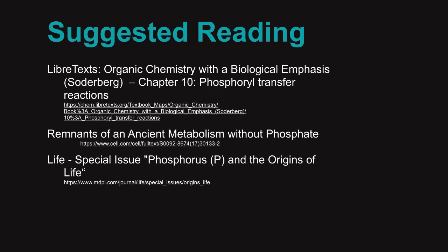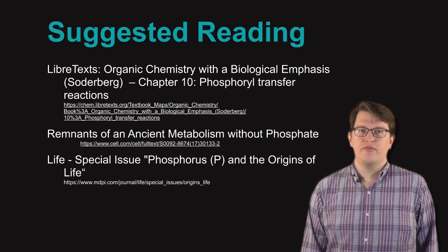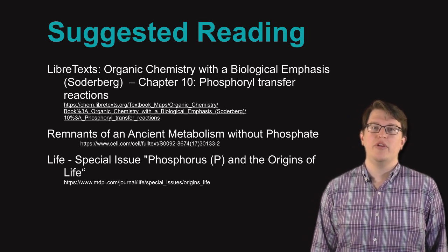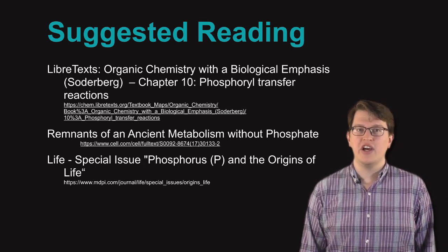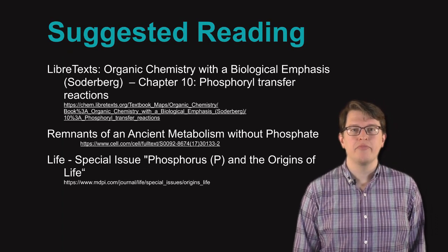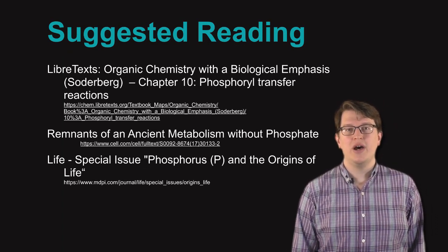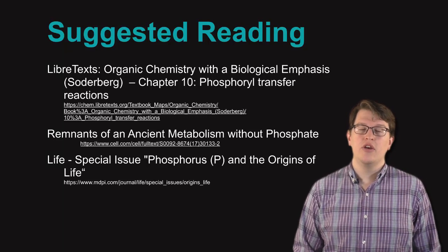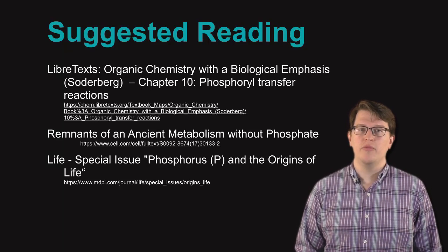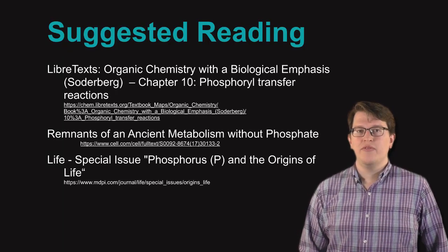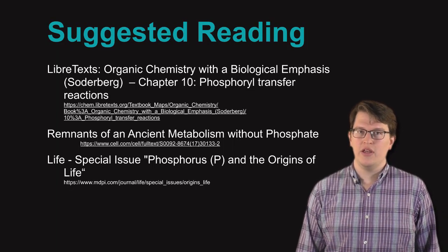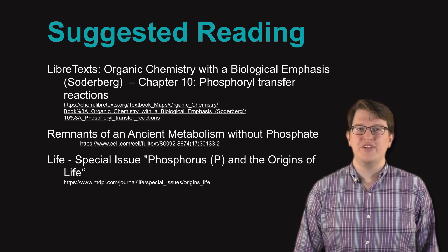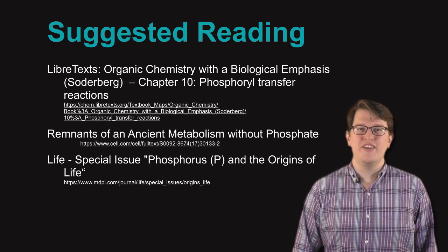If you're interested in these questions, LibreTexts — a collection of free online textbooks — has a book called Organic Chemistry with a Biological Emphasis that has an entire chapter on reactions of phosphate. You can also read about how an early metabolism that didn't involve phosphate could have been formed, or check out the journal Life, which has a special issue entirely about phosphorus and the origins of life. I would encourage you to check out those resources. Thank you.